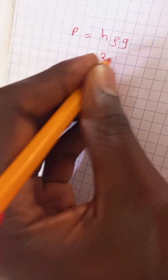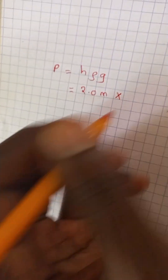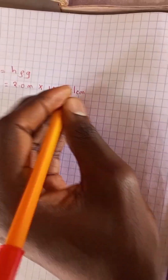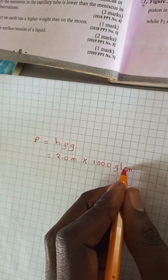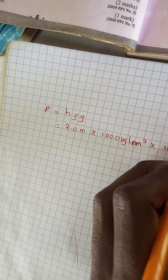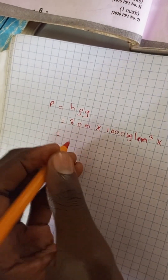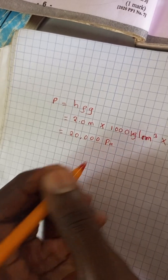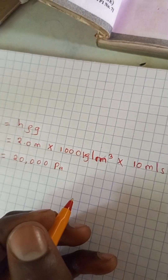The height of the water is the same as the depth of the tank, that is 2.0 meters, multiplied by the density of water — 1000 kilograms per cubic meter — times the acceleration due to gravity, 10 meters per second square. This gives a pressure of 20,000 Pascals, which is the pressure acting at the bottom of the tank on the cork.